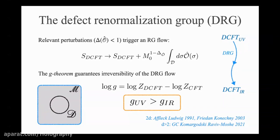A recent result that will play an important role in today's talk is that the RG flow is irreversible. In particular, there is a C-function — much like the two-dimensional C-function and the a-quantity in 4D — that decreases monotonically under RG. This C-function is the partition function for a defect placed on a circle minus the partition function of the CFT without the defect; it is a generalized F-function for a one-dimensional defect, called G. This result was established in two dimensions long ago following a conjecture of Affleck and Ludwig by Friedan and Konechny, and was recently generalized to higher dimensions in work with Zohar and Avia.